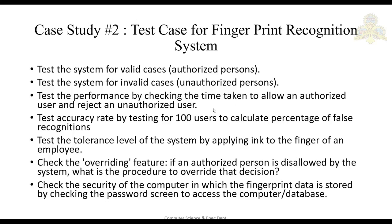Additional test cases include: performance — checking the time taken to allow an authorized user and reject an unauthorized user; accuracy — testing multiple users (hundreds) to calculate the percentage of false recognitions; tolerance — applying different finger positions or conditions and checking if login is allowed; override feature — if an authorized person is rejected, what is the next process; and security — checking the password screen protecting the database where fingerprint data is stored.